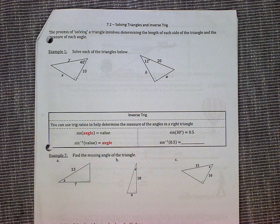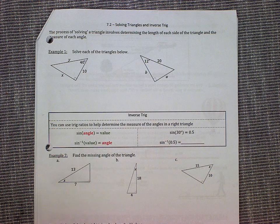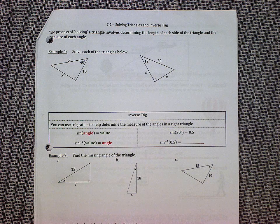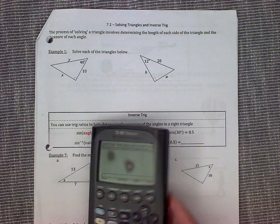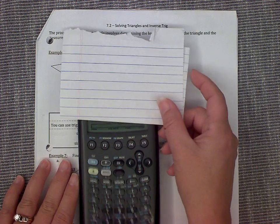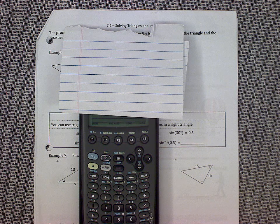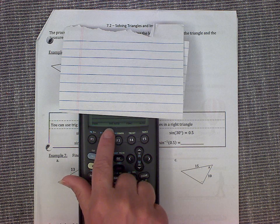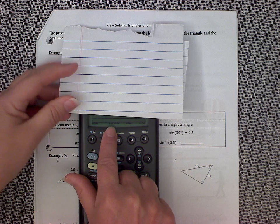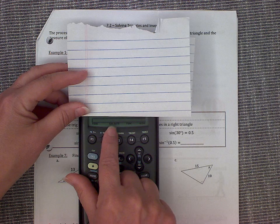Hello, this is section 7.2: Solving Triangles and Inverse Trig. You need to have your calculator with you. We will be going through how to do this on the TI-89. My calculator has a little damage so we'll have to ignore that. First, we need to make sure your calculator is in degrees. Right down at the bottom you can see I have 'rad' which is radians — a different way to measure angles. You need to make sure yours shows 'deg' for degrees.